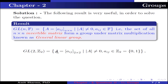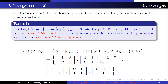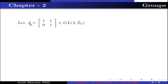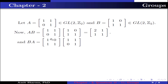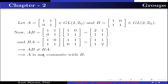Now GL2(Z2) = {A = [aij] (2×2 matrix) : det(A) ≠ 0, aij ∈ Z2}, and Z2 = {0, 1}. Consider the elements A = [[1,1],[0,1]] and B = [[1,1],[1,1]] in GL2(Z2). Computing the product BA gives a matrix with entries that differ from AB. This implies AB ≠ BA, so A and B do not commute, and hence GL2(Z2) is a non-abelian group.